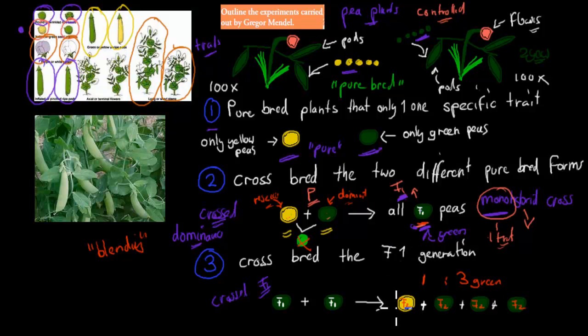For every three green ones that were produced, there was one yellow one, that ratio, one to three. Now, the yellow one in the F1 generation, when he crossed the first cross, was completely gone. There was no yellow one at all. It was lost. But for whatever reason, the F2 generation, the yellow one reappeared. Even though there was less of it, for every one yellow, there was three green. But overall, it reappeared.